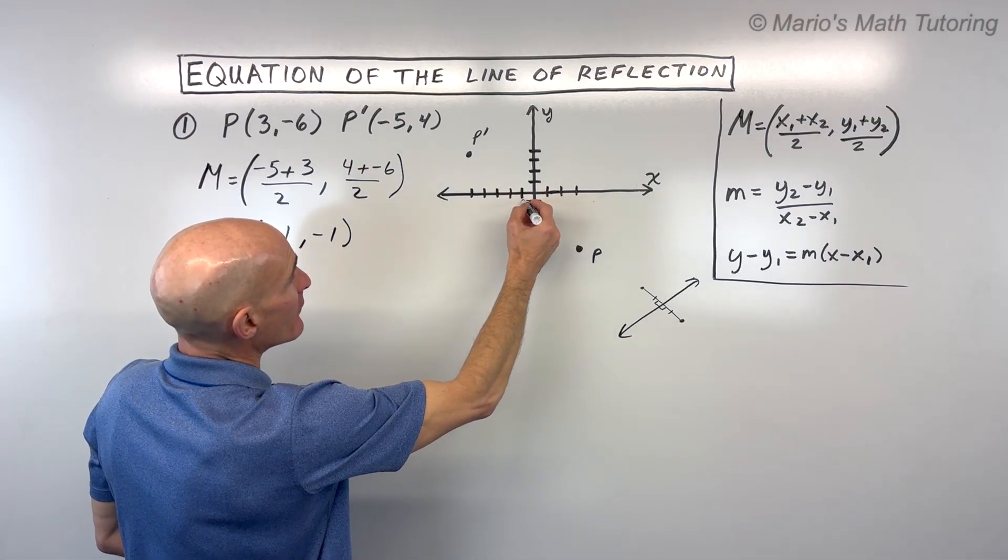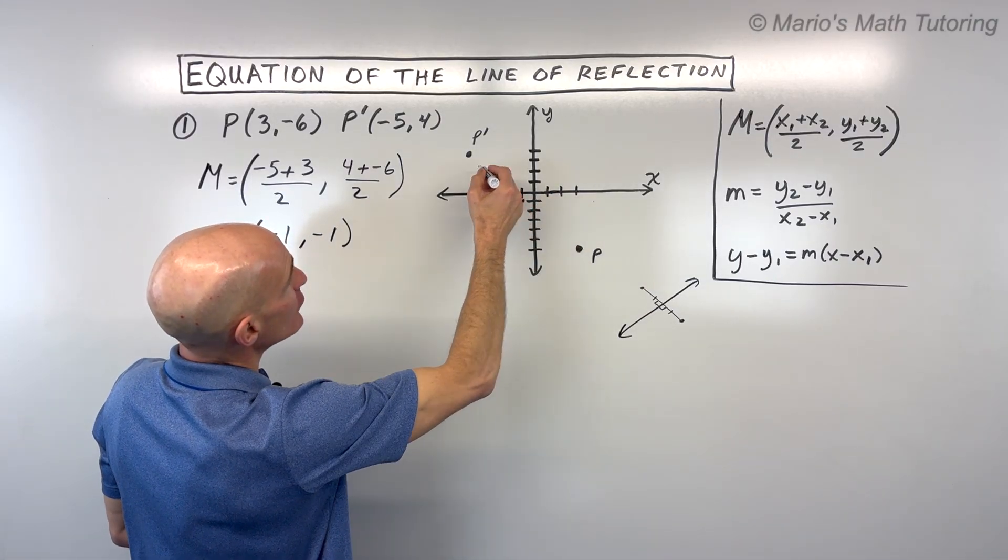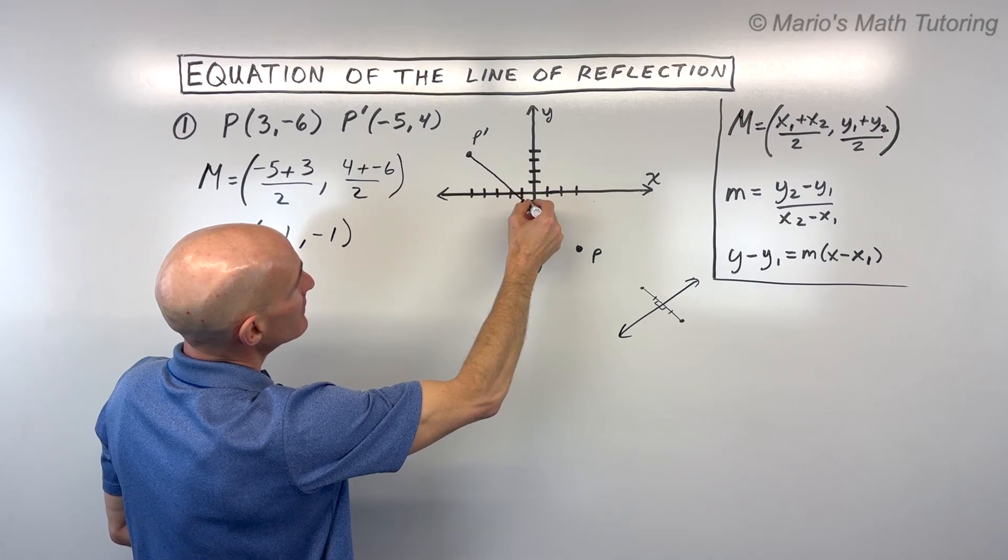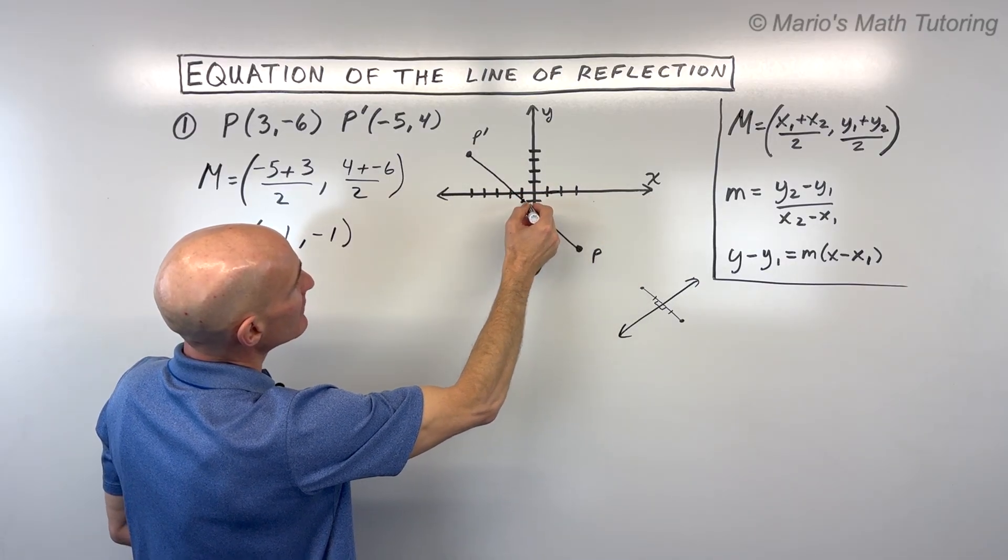Now we can even graph it here on our graph. Negative 1, negative 1 is right there. So if we were to draw a line, it's going to go right through that midpoint.